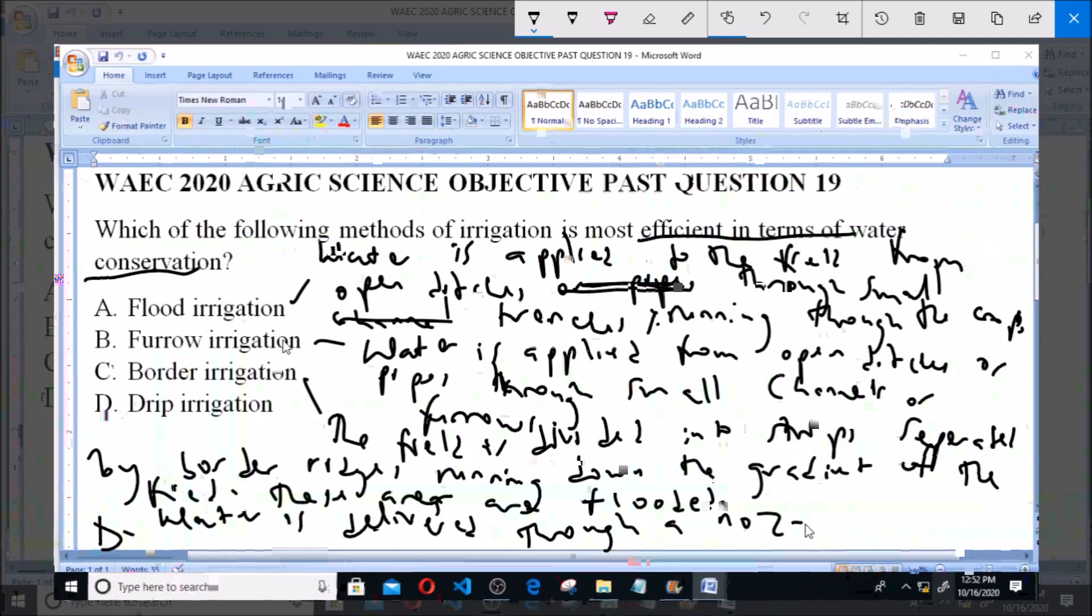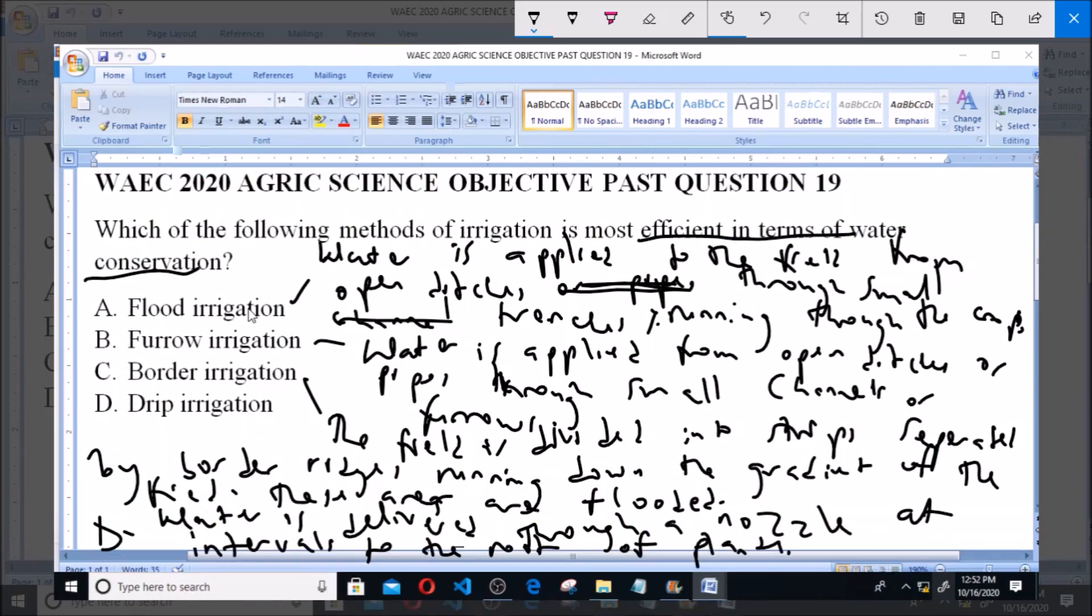So if you observe, options A, B, and C involve use of much water. They involve one way of flooding or the other. However, in drip irrigation the water is delivered through nozzles like small pipes at various intervals directly to the roots of the plant. So excess water is not usually left running over in drip irrigation. So it is the most efficient in terms of water conservation. So option D, drip irrigation, is the correct answer to this question.